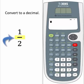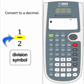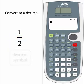The first method is to recognize that the line between the numerator of the fraction, which is the one, and the denominator of the fraction, the two, is actually a division symbol. The fraction one-half can be read as one divided by two, so we can change the fraction one-half to a decimal using the division key on the calculator.